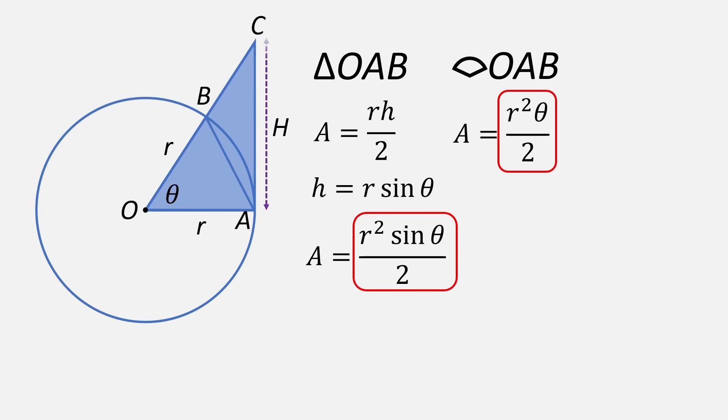For triangle O, A, C, if we assign a height big H, we can get its area using these two relationships from which we get R squared tan theta over 2.